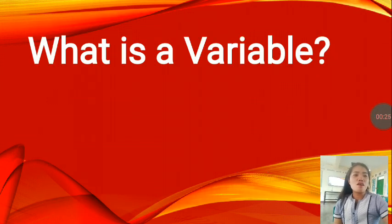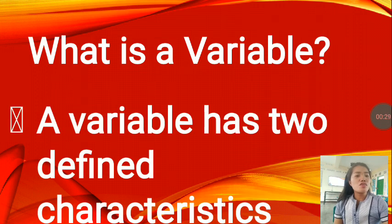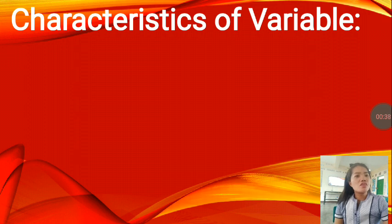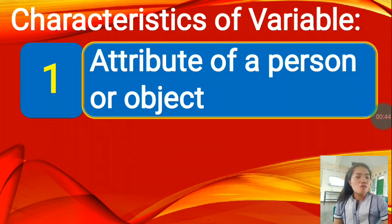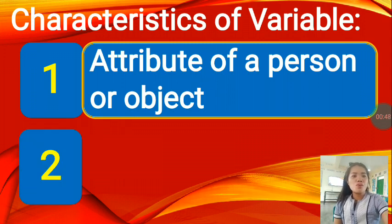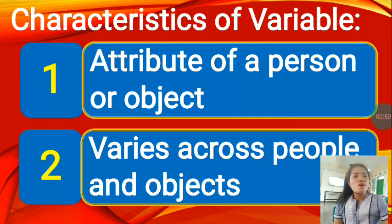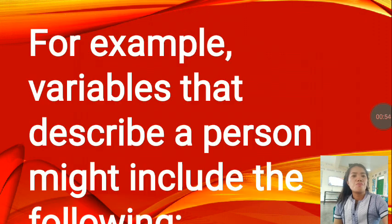What is a variable? A variable has two defining characteristics in the statistics context. The characteristics of a variable are: number one, attribute of a person or object, and number two, varies across people and object.